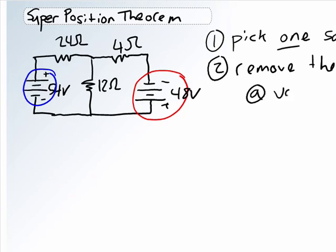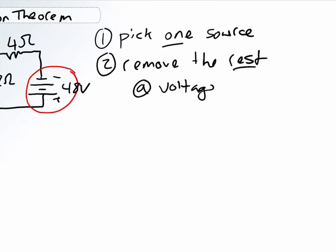Basically, if it's a voltage source, you replace it with a short circuit. If it's a current source, you replace it with an open.